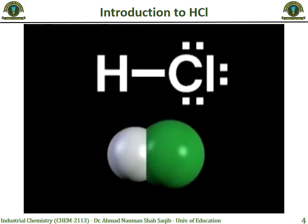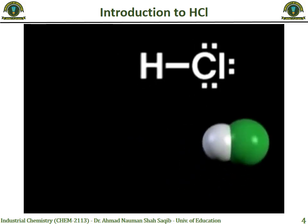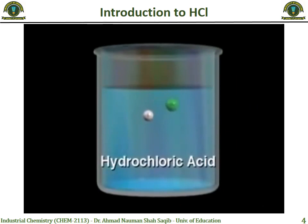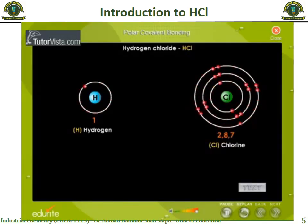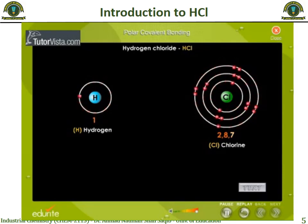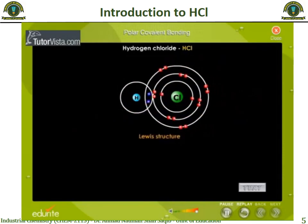An acid is a substance that produces hydrogen ions when dissolved in water. Hydrogen chloride is an example of a common and important acid. When hydrogen chloride gas dissolves in water it forms hydrochloric acid; it is very soluble in water and completely dissociated, making it a strong electrolyte. The molecule HCl is formed by sharing a pair of electrons between hydrogen and chlorine. Chlorine, being more electronegative, pulls the shared electrons closer, giving chlorine a small negative charge (delta negative) and hydrogen a small positive charge (delta positive).